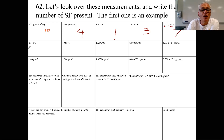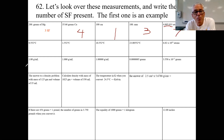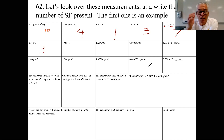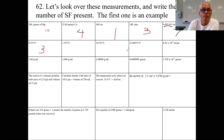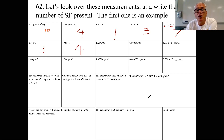This number has a leading zero: 0.552. Leading zeros don't count — only the numbers after, so that's three significant figures. Next up is a large temperature — looks like the melting point of a metal — and it has four significant figures because there are no zeros.